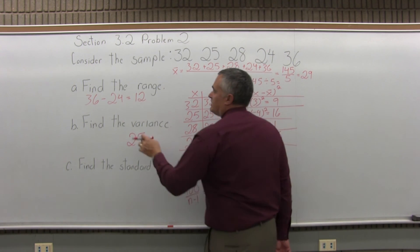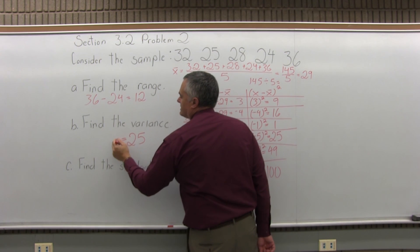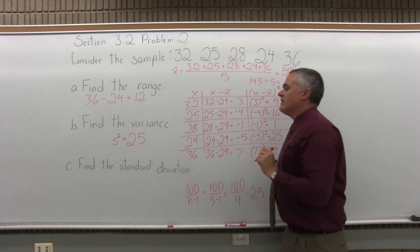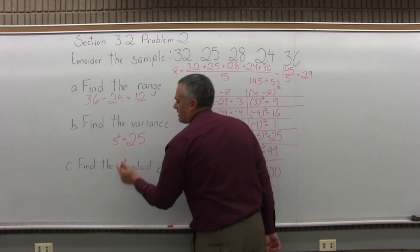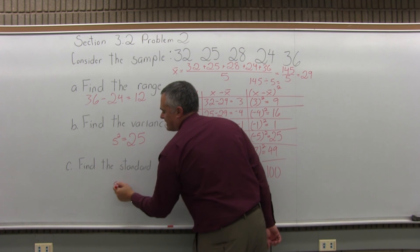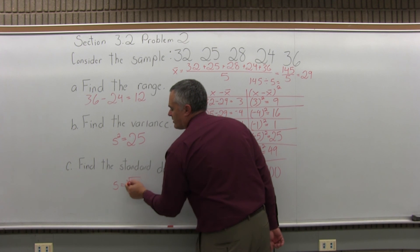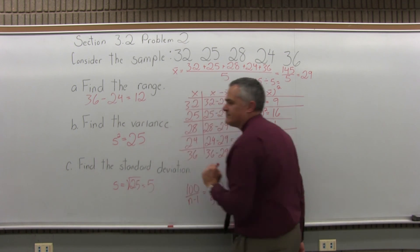And again, if you want to use the symbols, since this is a sample, the symbol for variance is s second power. And then, if you want to find the standard deviation, it will be the square root of the variance and the symbol is just s. s for standard deviation, lowercase, square root of 25 is 5.